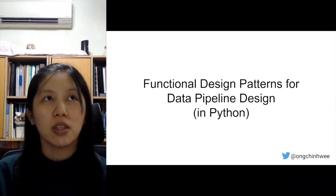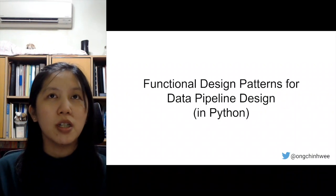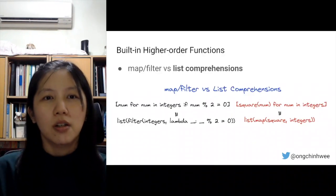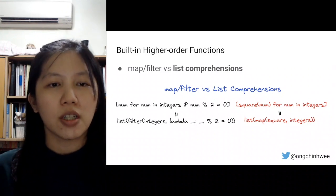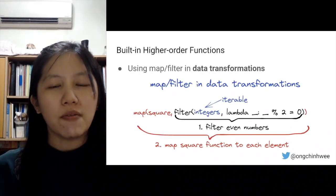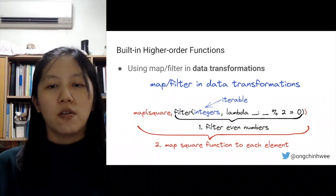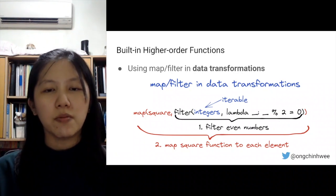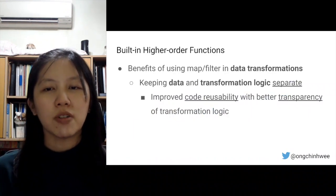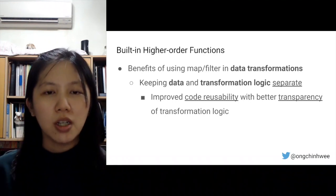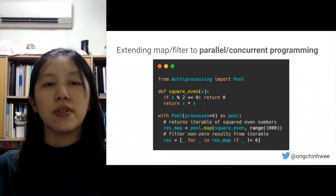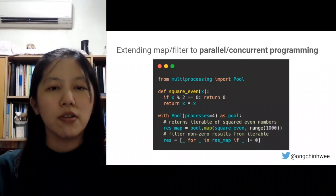Now let's talk about functional design patterns for data pipeline design. We have list comprehensions, which are effectively syntactic sugar for map and filter operations on a data collection. We can use map and filter in data transformation — filter out what we don't need, then map using the operation. The benefit is that we keep data and transformation logic separate, improving code transparency of the transformation logic.